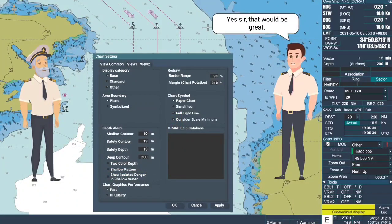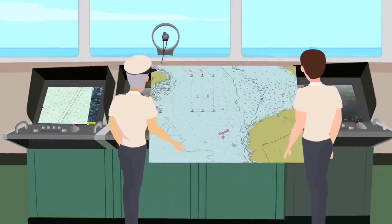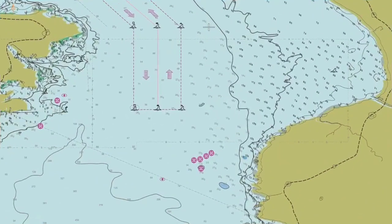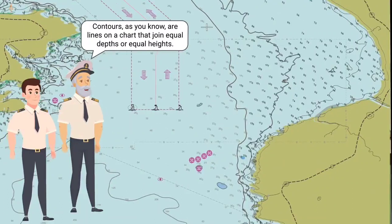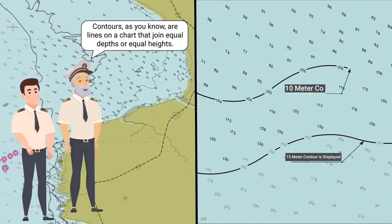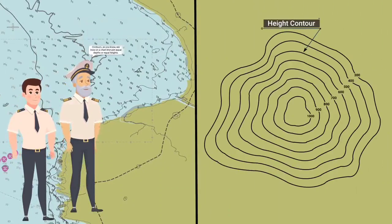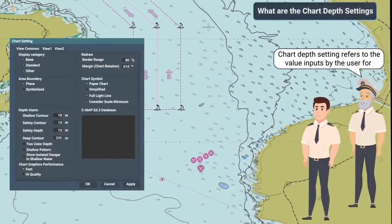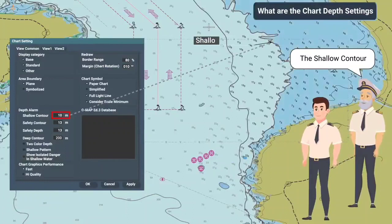Yes, sir, that would be great. Contours, as you know, are lines on a chart that join equal depths or equal heights. Chart depth settings refer to the value inputs by the user for the shallow contour, safety contour, safety depth,